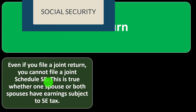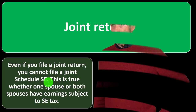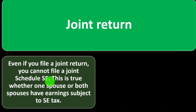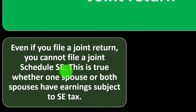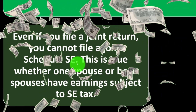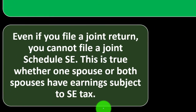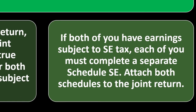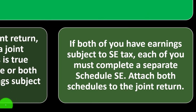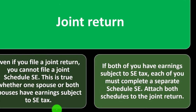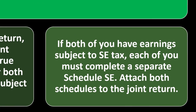The self-employment contributions must be allocated to the proper person because it affects the amount of benefits they'll receive at retirement from Social Security. This is true whether one spouse or both spouses have earnings subject to self-employment tax. If both of you have earnings subject to self-employment tax, each of you must complete a separate Schedule SE and attach both schedules to the joint return.